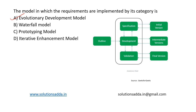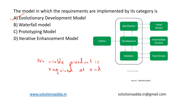An evolutionary process model resembles the Iterative Enhancement Model. It has the same phases as that of the waterfall model. This model differs from the Iterative Enhancement Model in the sense that it does not require a usable product at the end of each cycle.